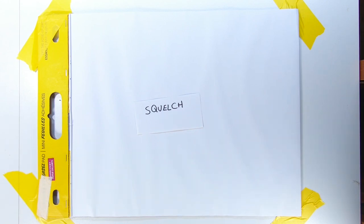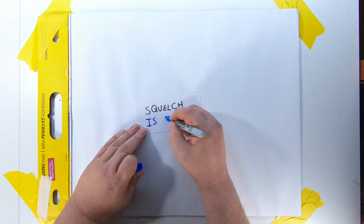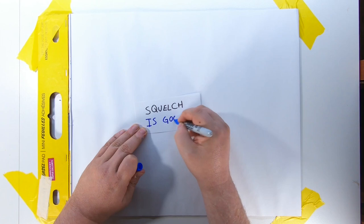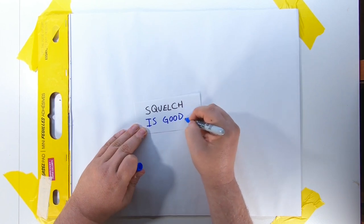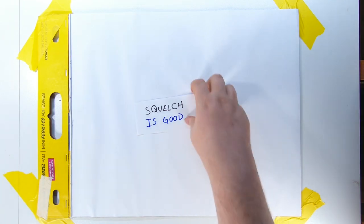A squelch circuit mutes the audio output of the radio unless it detects a signal on frequency. This prevents us from having to hear static when nothing is happening. On a weaker station, the squelch might not allow a signal through, or it might cut in and out intermittently. Sometimes squelch is a distinct knob, and there is also often a monitor or MON button that temporarily disables squelch to allow us to hear weaker stations.